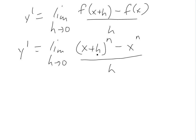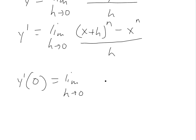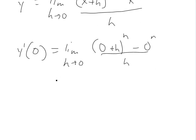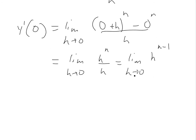So we have this. Let's just say at 0, y prime at 0, or x equals 0, we're going to have limit h approaches 0 of 0 plus h to the n minus 0 to the n, all over h. This simplifies to limit h approaches 0 of h to the n all over h. You can simplify this one into limit h approaches 0 of h to the n minus 1. And as it goes to 0, this equals 0.